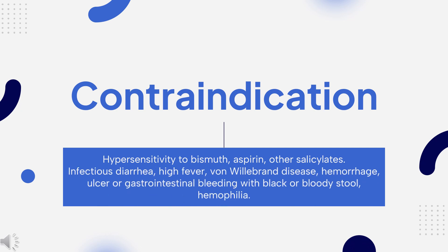Contraindication: Bismuth is contraindicated for patients known to have hypersensitivity to bismuth, aspirin, or other salicylates; infectious diarrhea; high fever; von Willebrand disease; hemorrhage; ulcer; or gastrointestinal bleeding with black or bloody stool; hemophilia.